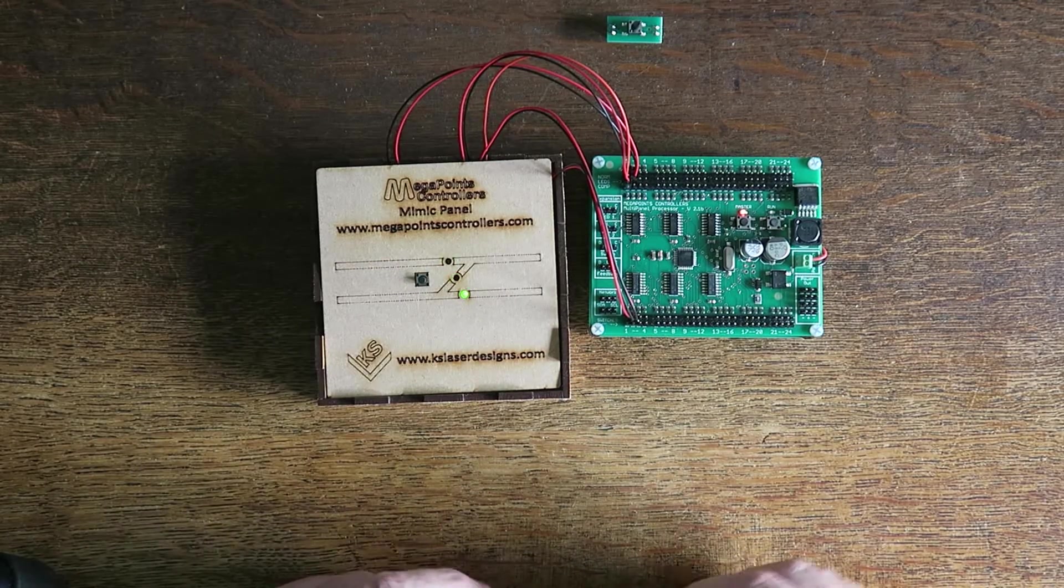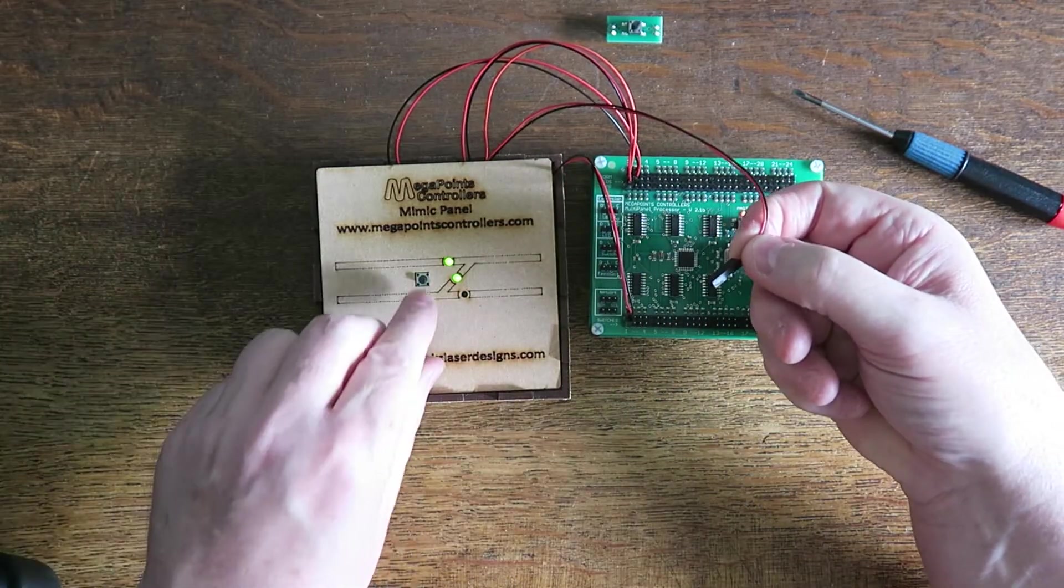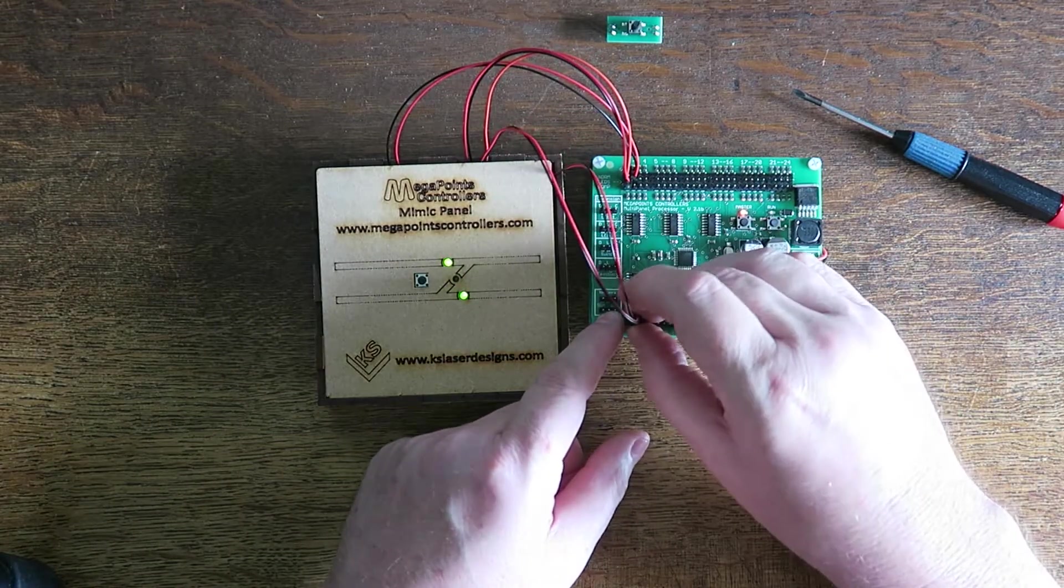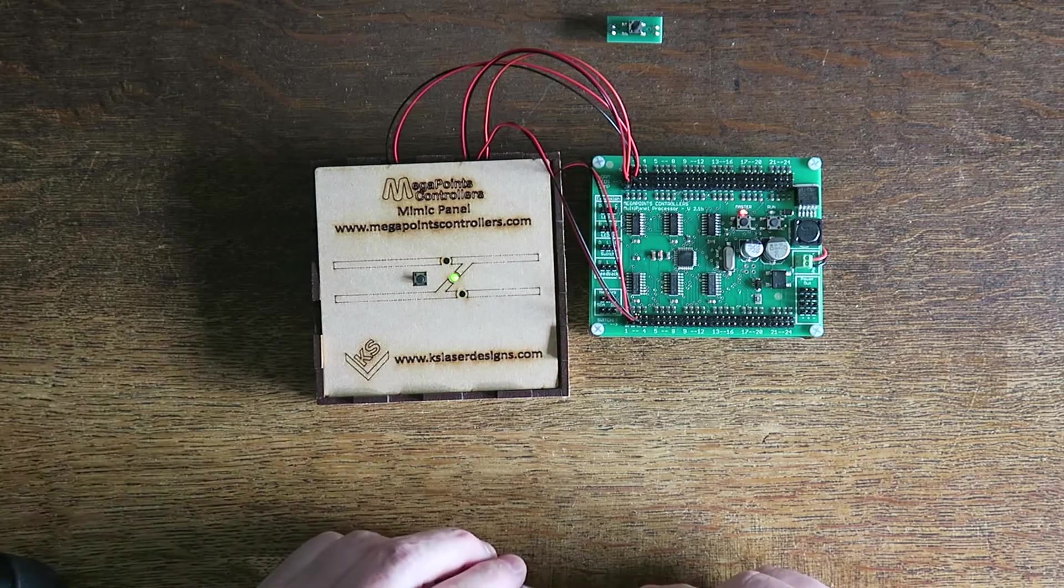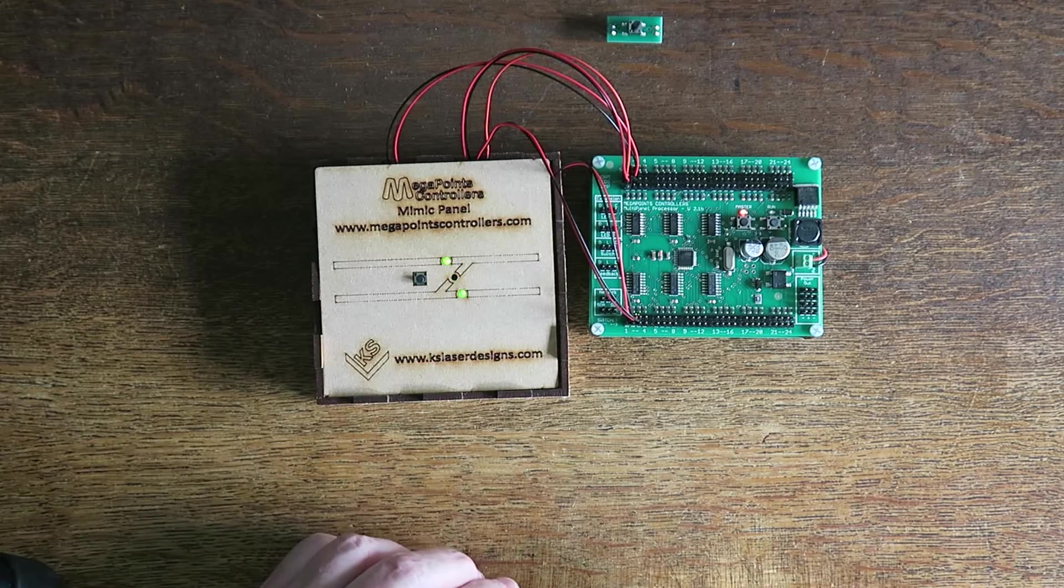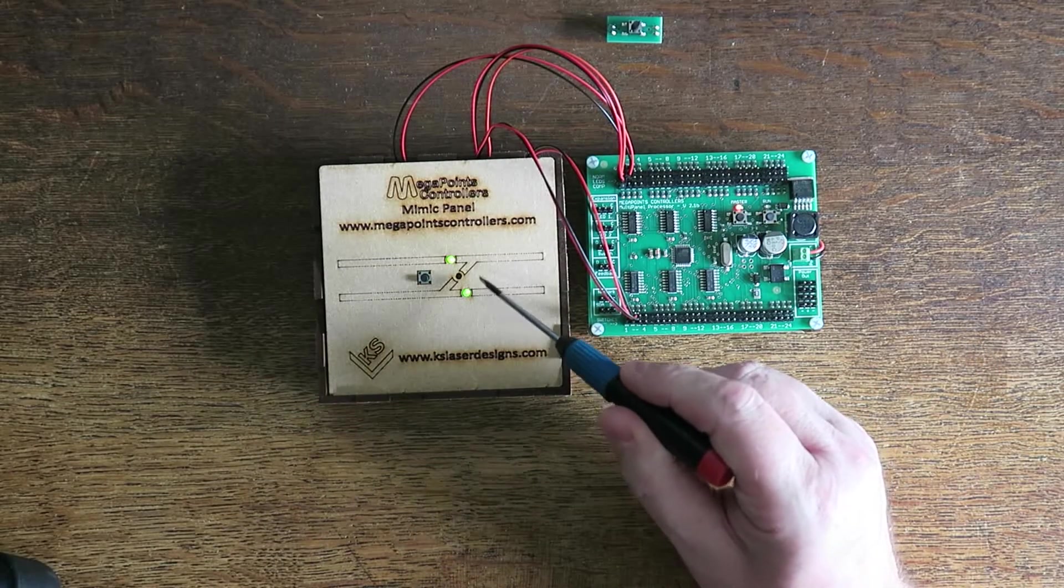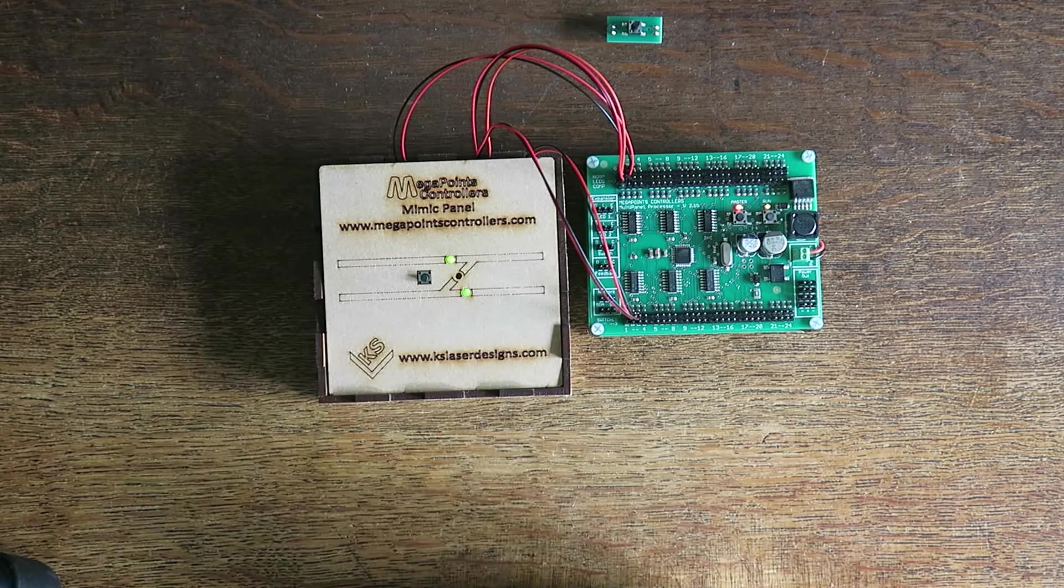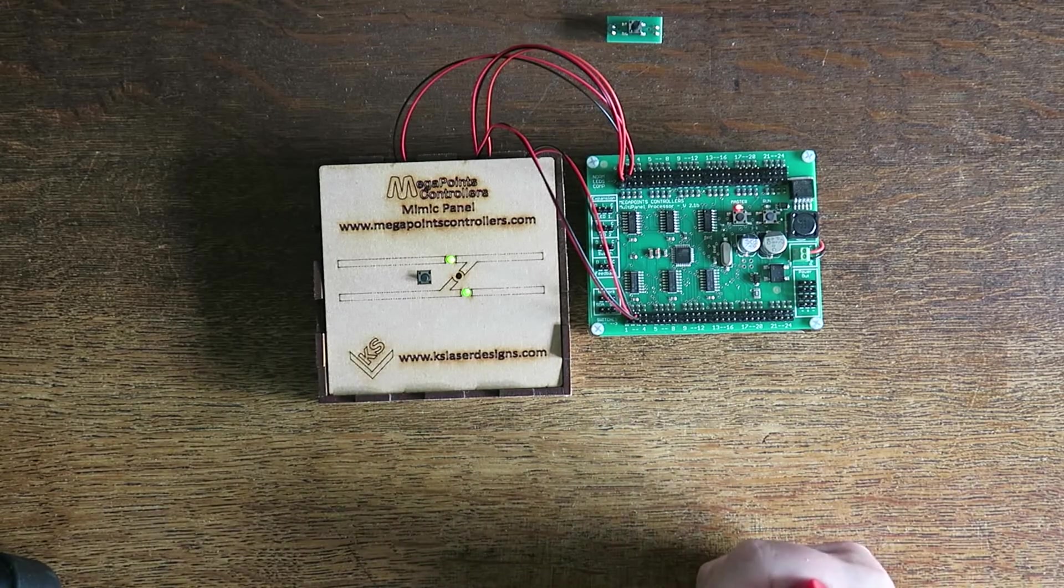All you do, and this is so simple, is disconnect one of the button leads, press the button once, reconnect the lead and that's it sorted forever. Every time I press the button now, you can see it work one way and the correct way. So that's how you would correct a phasing error or having one turnout out of sync with the other. Of course if you're switching more than two points with a single button, then you could have all sorts of interesting combinations. But if you think through, that's all there is to it.